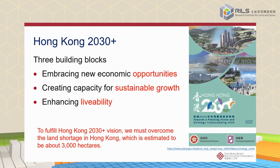Looking at the Hong Kong 2030 vision, there are three building blocks. The first is to embrace new economic opportunities through collaboration with the mainland, which will bring a lot of opportunity for Hong Kong. The second is about capacity for sustainable growth — not just growth, but what is good for us and for future generations. The third is about livability, which is very important for Hong Kong so we can attract more people to help the economy.